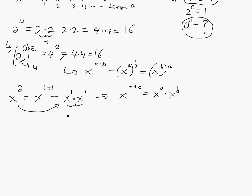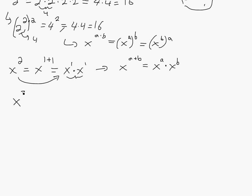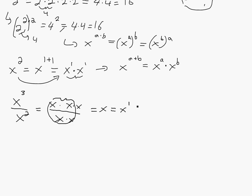Let's say we have x cubed divided by x squared. If we apply the definition, we have x times x times x divided by x times x. You can see the x's cancel, so you're left with x, or x to the 1 — same thing. And what also happens here is you can just subtract the top exponent minus the bottom: x to the 3 minus 2 equals x to the 1. In general, x to the a divided by x to the b equals x to the a minus b.